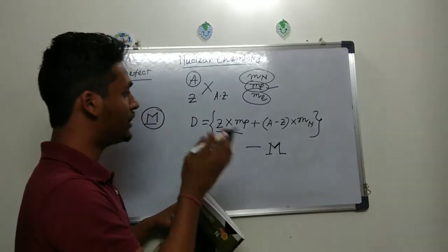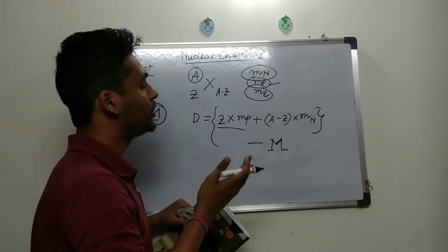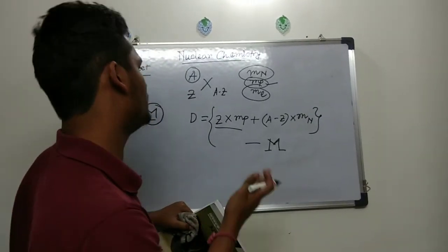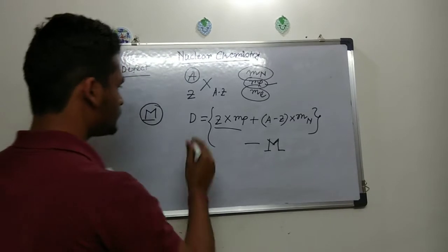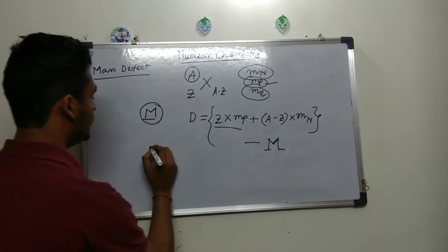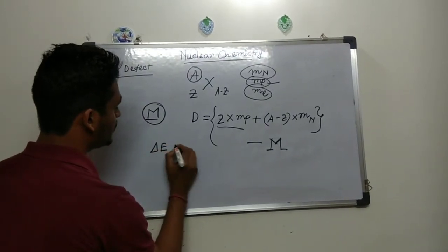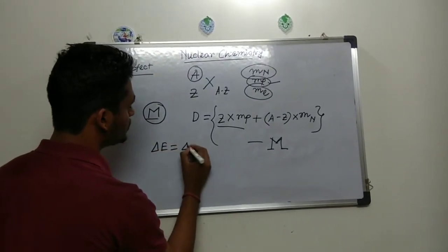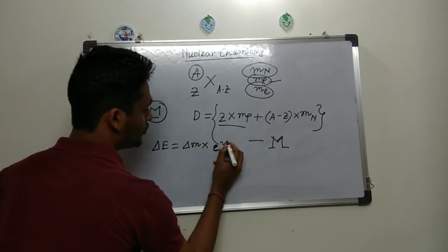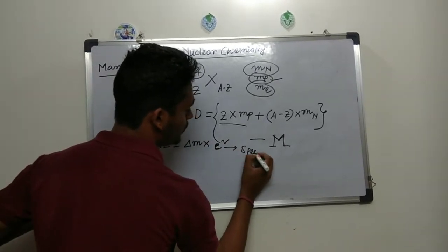This mass defect transforms into energy, which provides stability to the nucleus. The energy is given by the famous Einstein equation: ΔE = Δm × c², where c is the speed of light.